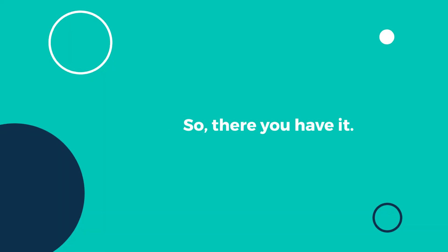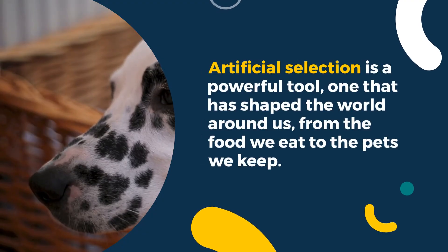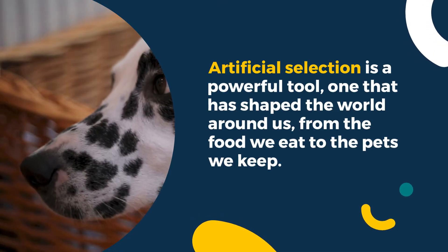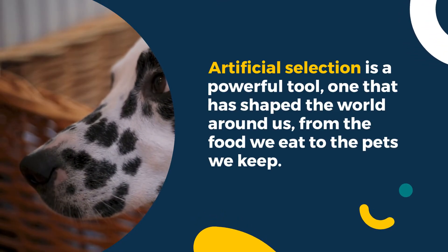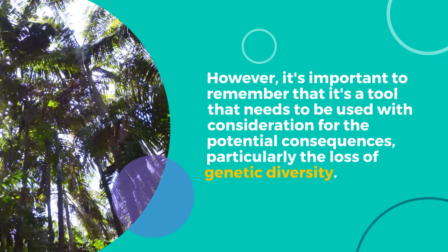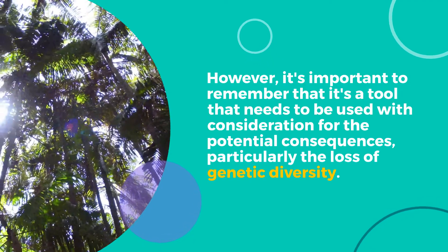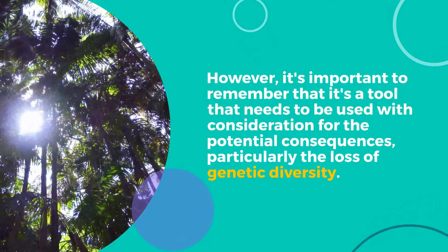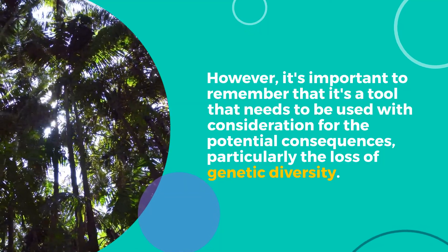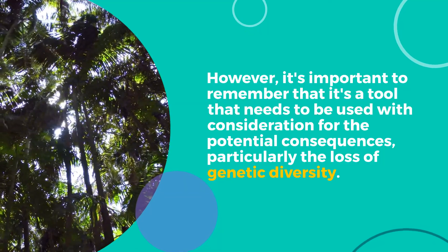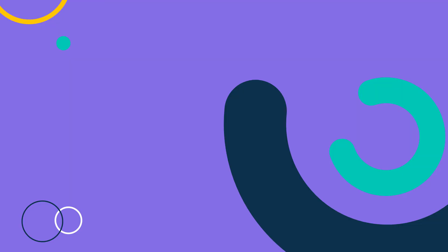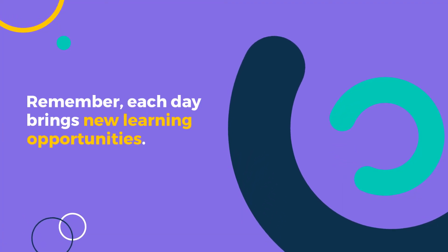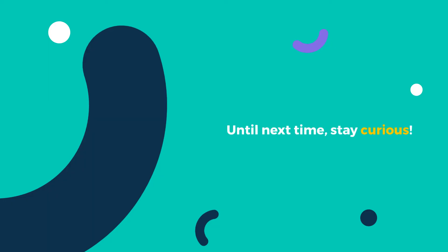So, there you have it. Artificial selection is a powerful tool, one that has shaped the world around us, from the food we eat to the pets we keep. However, it's important to remember that it's a tool that needs to be used with consideration for the potential consequences, particularly the loss of genetic diversity. That wraps up our session. Remember, each day brings new learning opportunities. Until next time, stay curious.